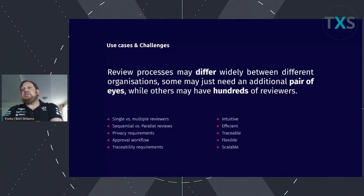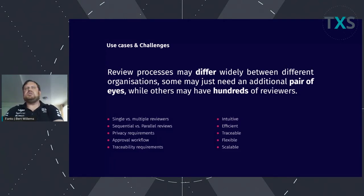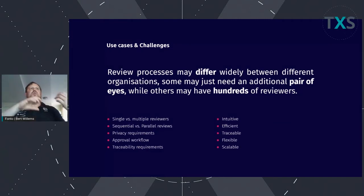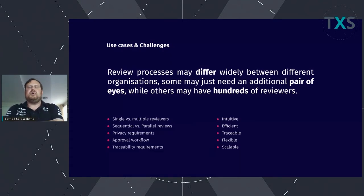The workflows tend to be quite different between different organizations, and sometimes even within the same organization. We covered single-author single-reviewer all the way to hundreds of reviewers. Another important requirement is privacy — for example in a blind review, the reviewer is not supposed to know who the author is, and if the reviewer creates a comment, the author should not be able to see the reviewer's name, to prevent them from influencing each other directly.